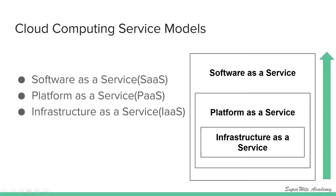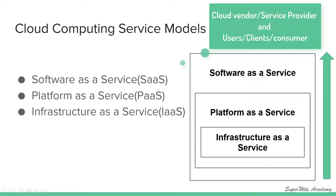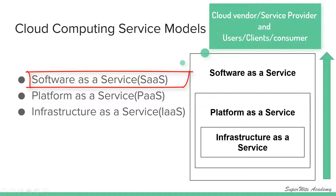NIST has defined three basic service delivery models. There are two stakeholders: the cloud service provider, also known as the vendor, and the client or consumer who consumes the cloud services. Each service model defines the responsibility area for each stakeholder. The first is Software as a Service, which is a complete operating environment with application management and a user interface — like Gmail, Salesforce, or Facebook. Here, everything from application down to the infrastructure is the responsibility of the cloud service provider.